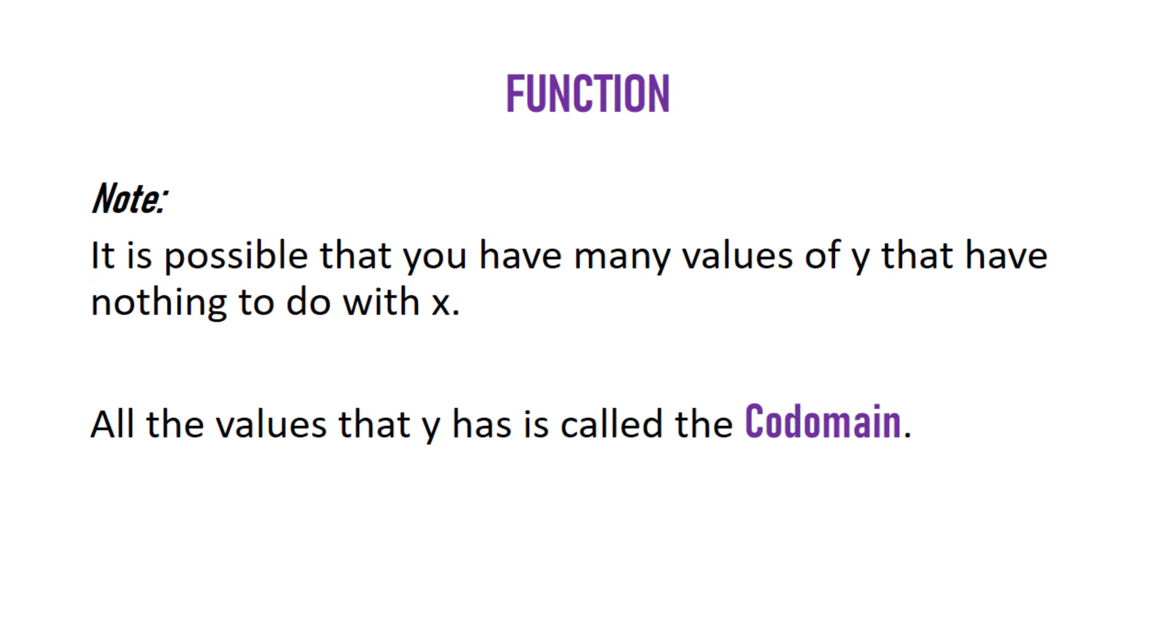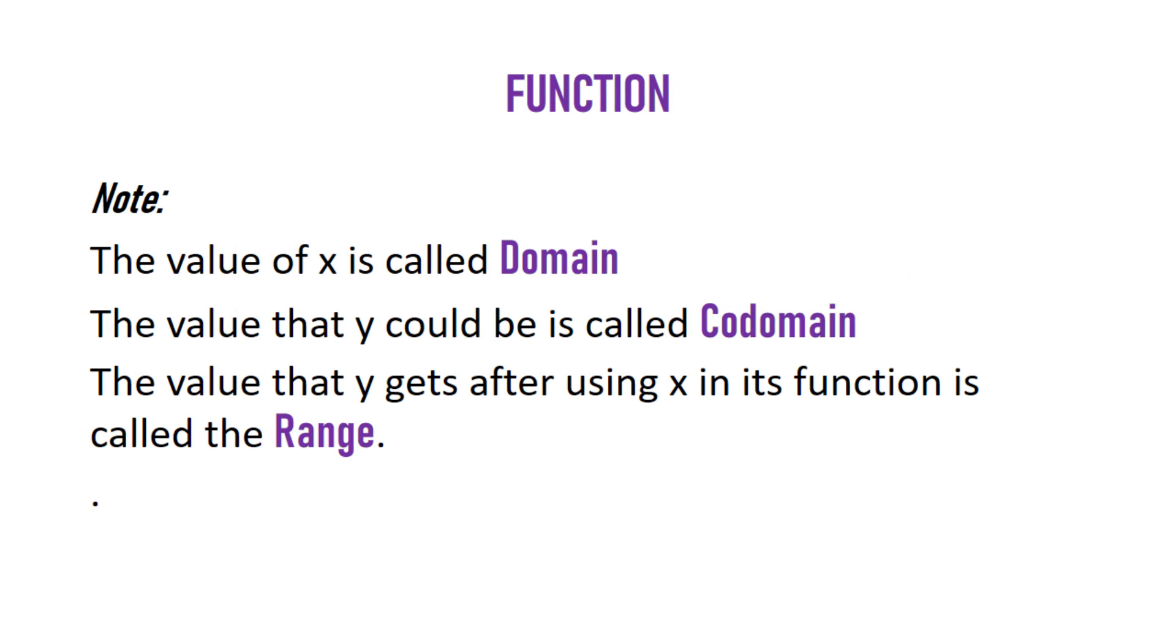It's possible that you have many values of y that have nothing to do with x. All the values that y could have is called the codomain. Don't get it wrong: the value of x is the domain, the value that y could be is the codomain, and the value y gets after using x is the range.